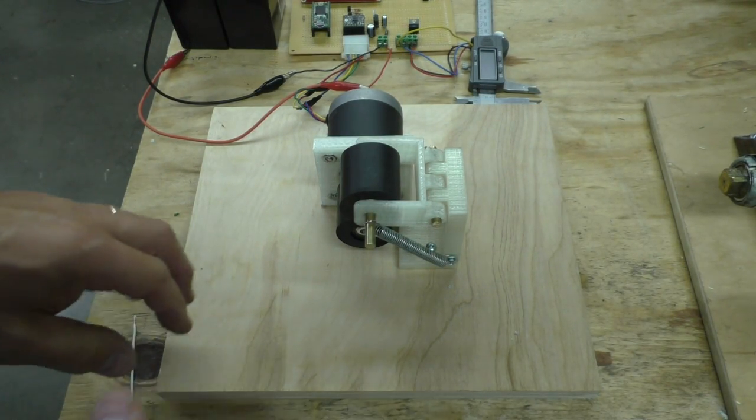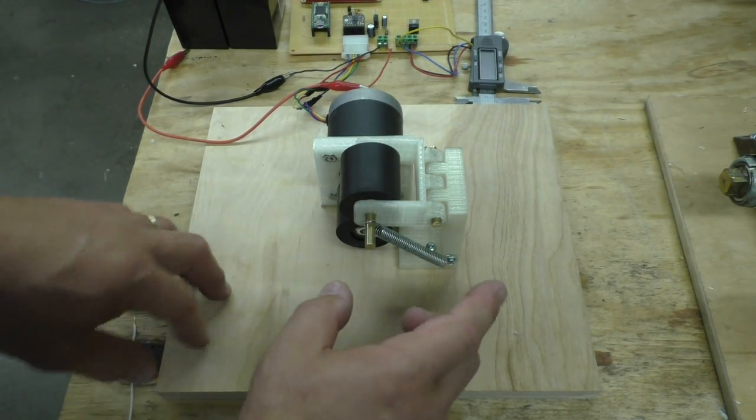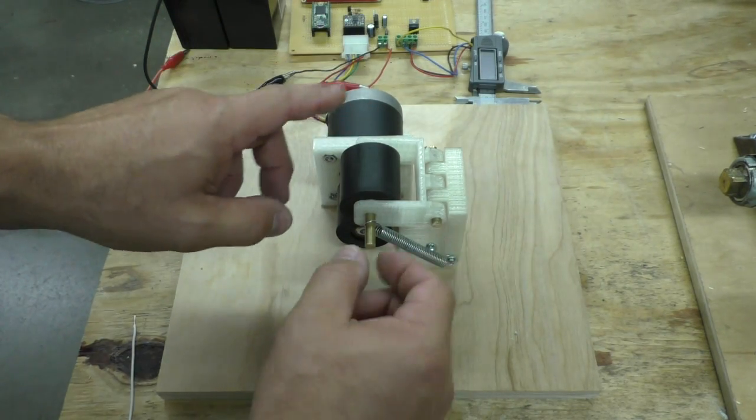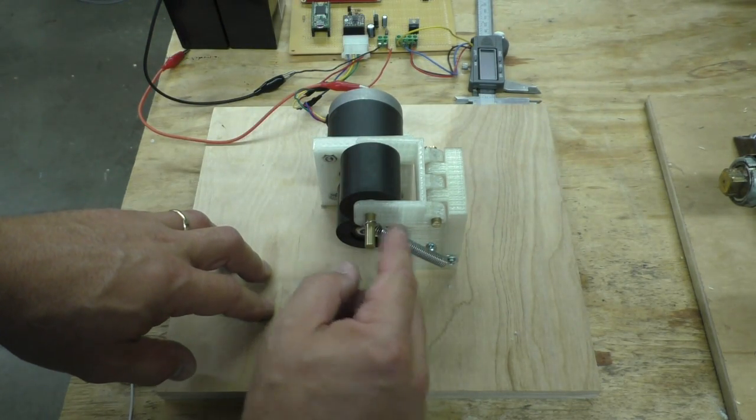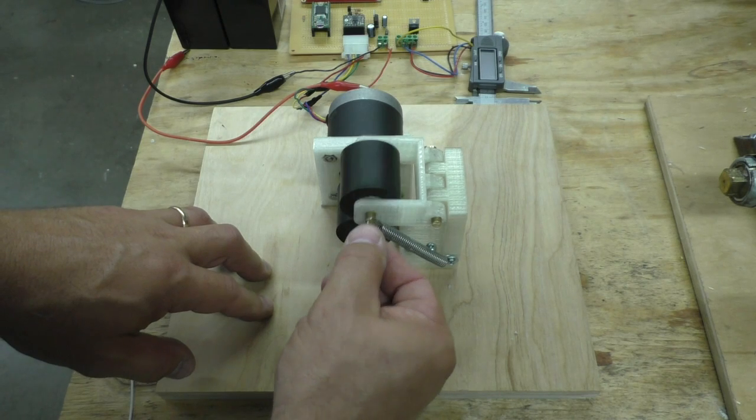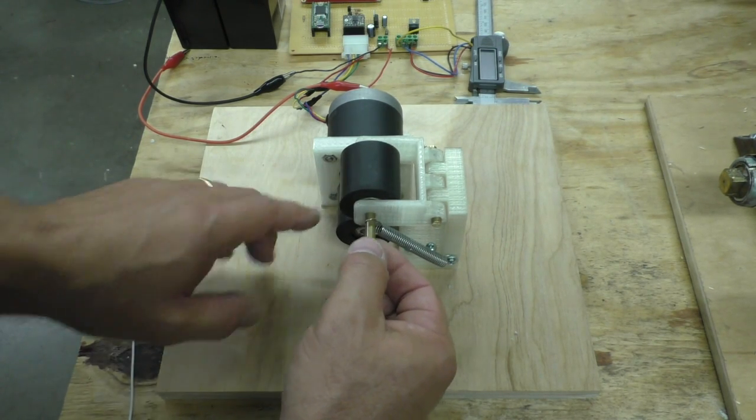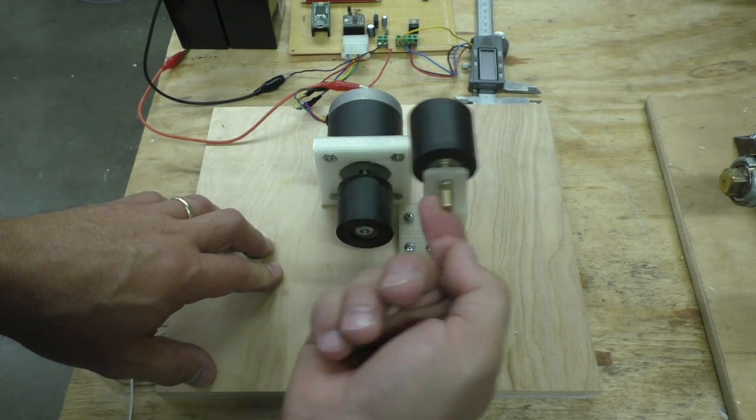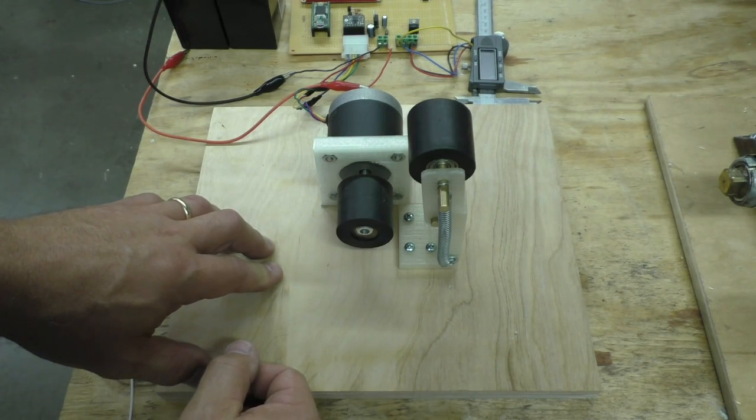So everything is assembled here. And I've got the motor and the rollers. And I've mounted this spring on here to put tension down on the drive roller here. And another nice feature is you can lock it in the up position.